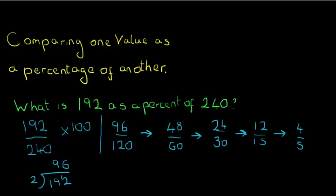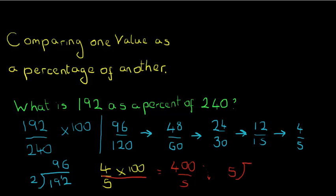Bringing in the times 100, we have 4 over 5 times 100. Extending that line: 4 times 100 is 400 and 5 remains unchanged. Tipping it over: 5 into 4 doesn't go, so 5 into 40 is 8 — the 8 goes over the end of the 40 — and then 5 into 0 is 0. So the answer for what is 192 as a percentage of 240 is 80 percent.